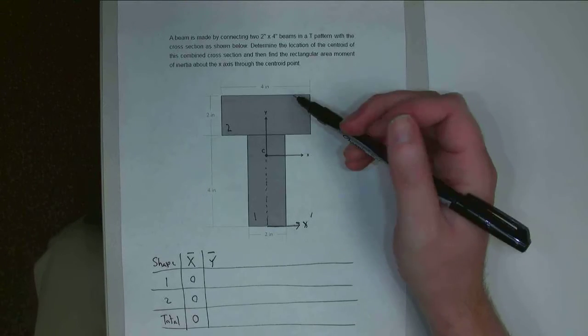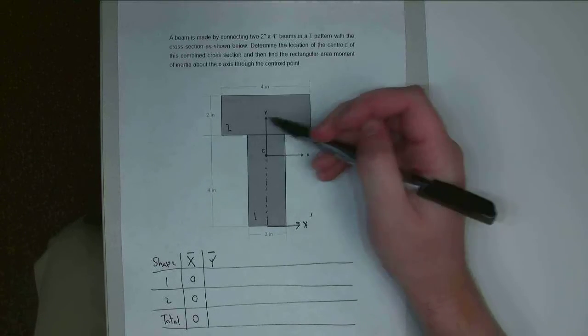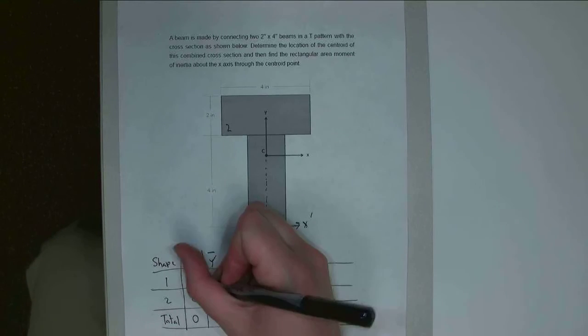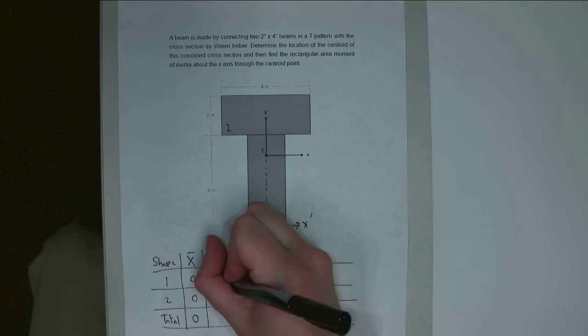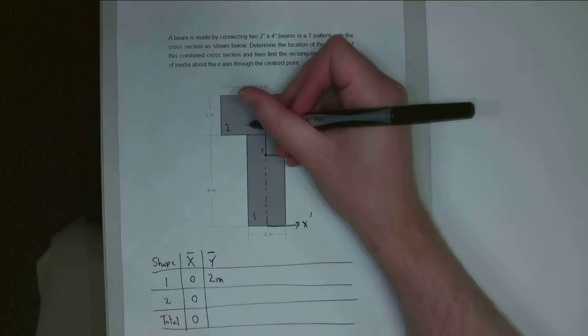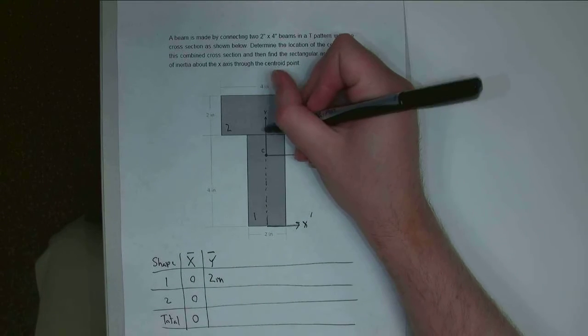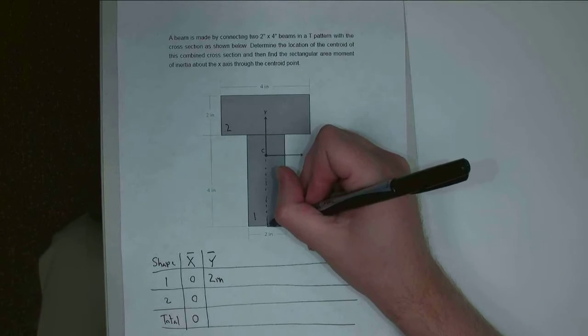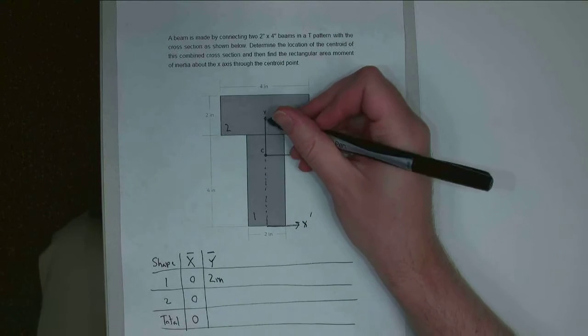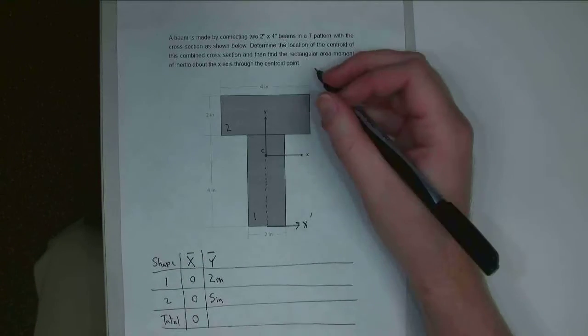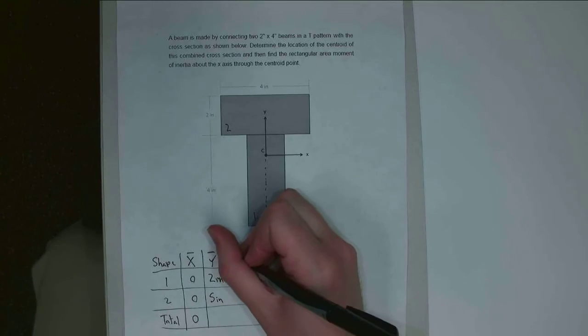And then I'm going to look for the centroid of each of my parts as well. So for part 1, the base piece here, it's 4 inches tall, and so the center of that is going to be 2 inches up. And for the second one, I've got this top piece. If it's 2 inches tall, it's going to be 1 inch up there. But I have to go all the way 4 inches up, and then an additional 1 inch there, so it's going to be 5 inches up there.